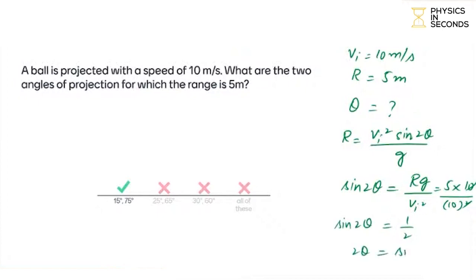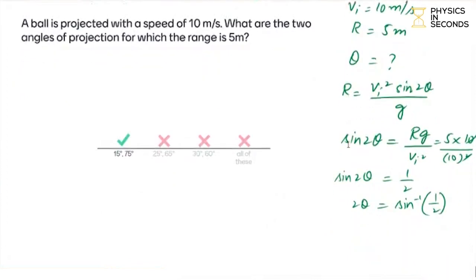2θ equals sin inverse 1 by 2. Sin inverse 1 by 2 is 30 degrees. So here you will have angle 2θ is 30, so θ is 15.